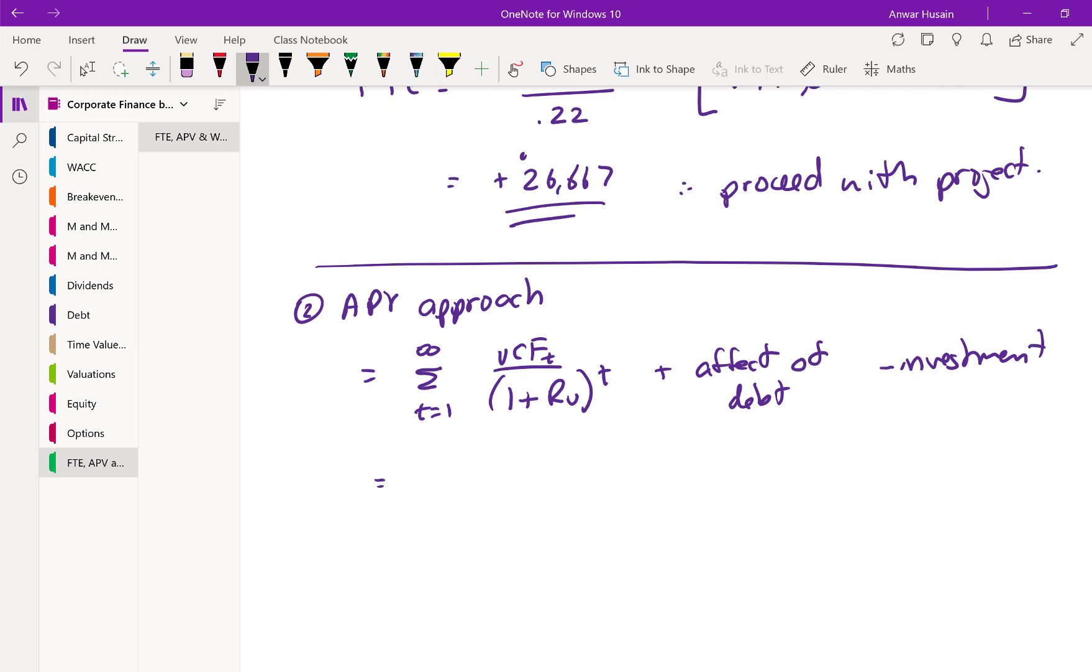So what's the unlevered cash flow? That we calculated up above of 84,000. So that was, remember, it was just the 140 that was given, adjusted for the 40% tax rate. What's the unlevered cost of equity? That was given as 20.